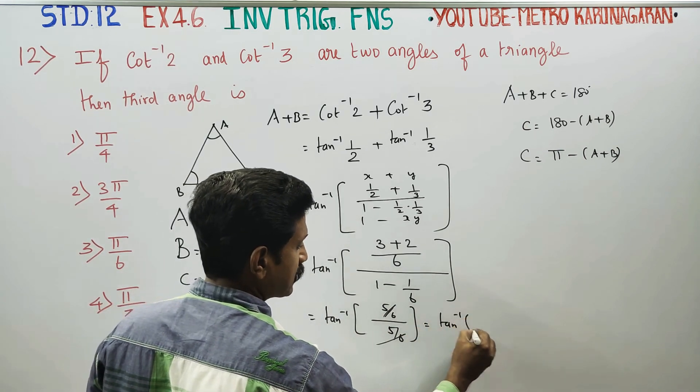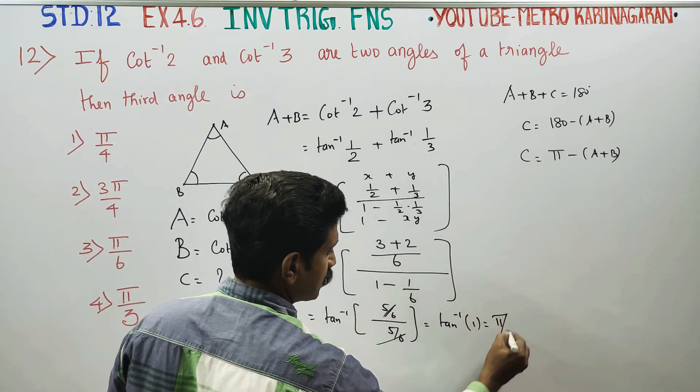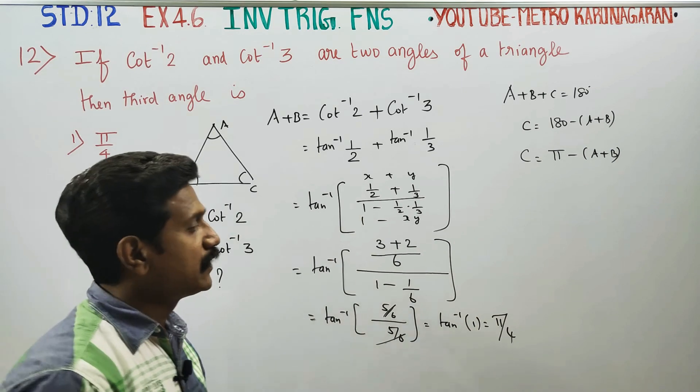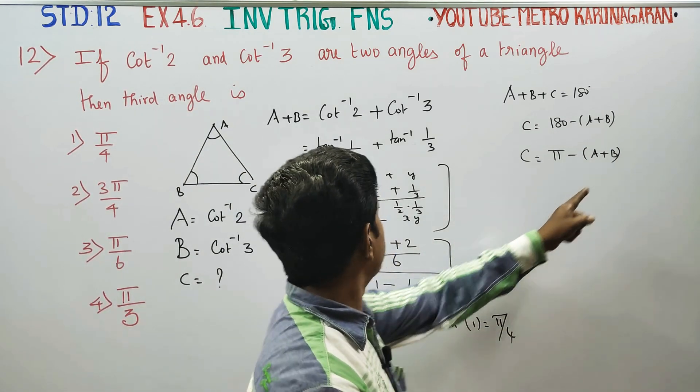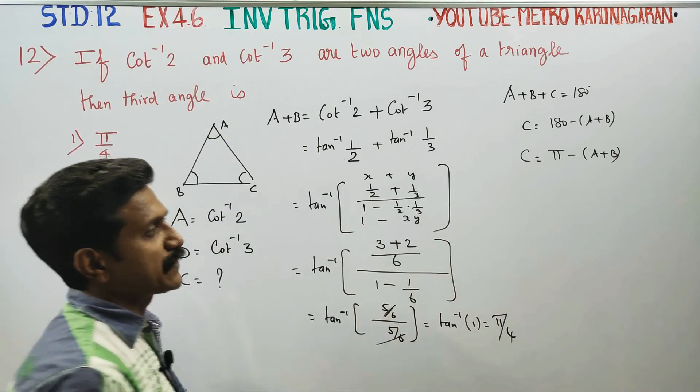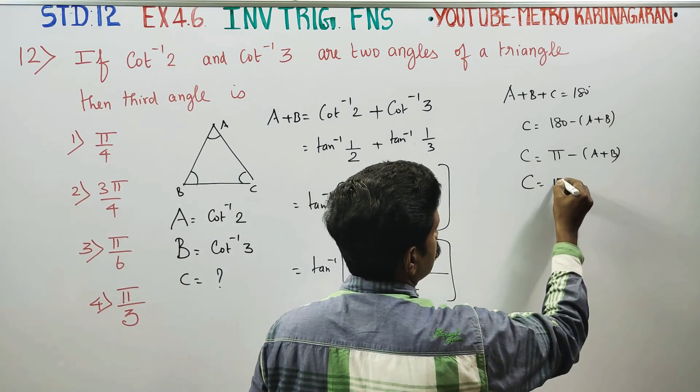Tan inverse of 1, you are going to get pi by 4. A plus B equals pi by 4.